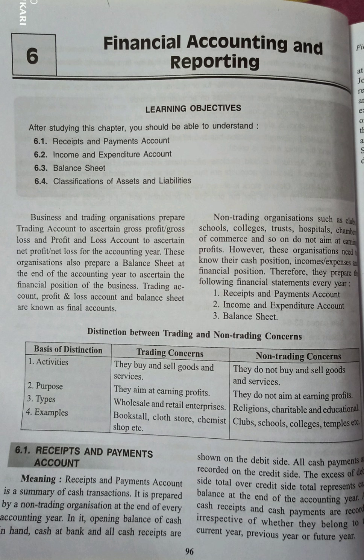Some non-trading organizations are like clubs, schools, colleges, trusts, hospitals, and chambers of commerce. These organizations need to know their cash position, incomes and expenses, and also their financial position. So for that they prepare financial statements every year: receipts and payments account, income and expenditure account, and lastly the balance sheet.